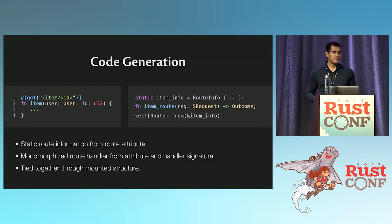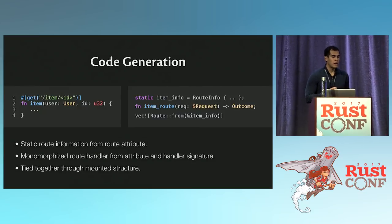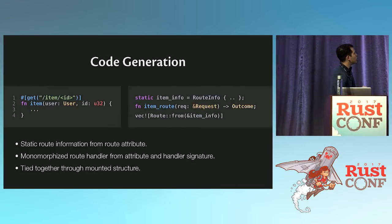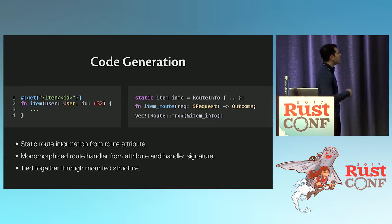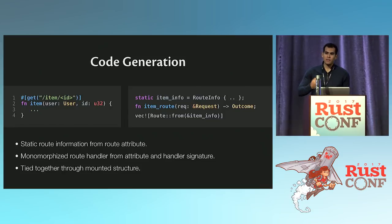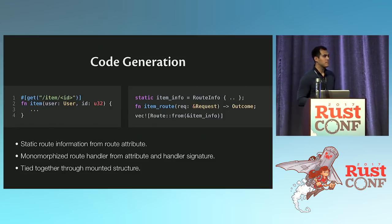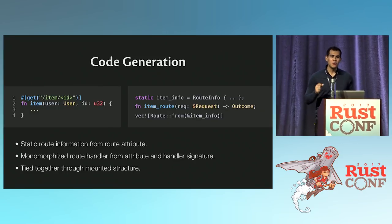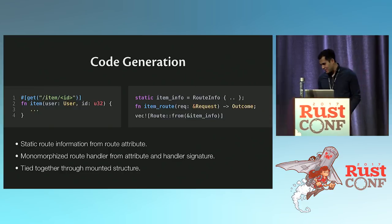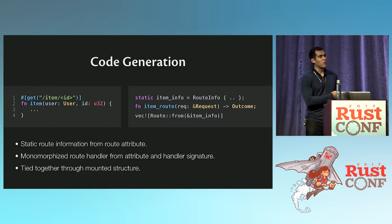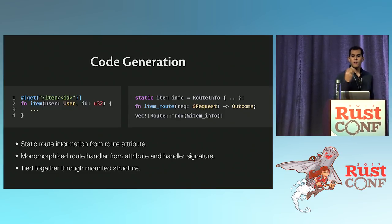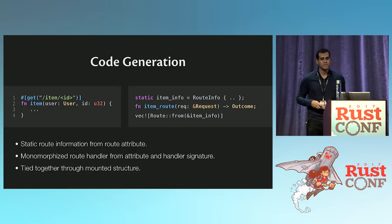This really is the code that Rocket will generate, modulo making it pretty to fit in this slide. In summary, this is all the code generation that Rocket does: it takes the route attribute and generates a static route information structure; it takes your route handler and monomorphizes it into something that goes from request to outcome; and it takes your `routes!` macro and converts it into a vector containing routes. That's it. If you tell me this is magic, then I don't know what magic is — this is super simple, this is probably what you'd do anyway.